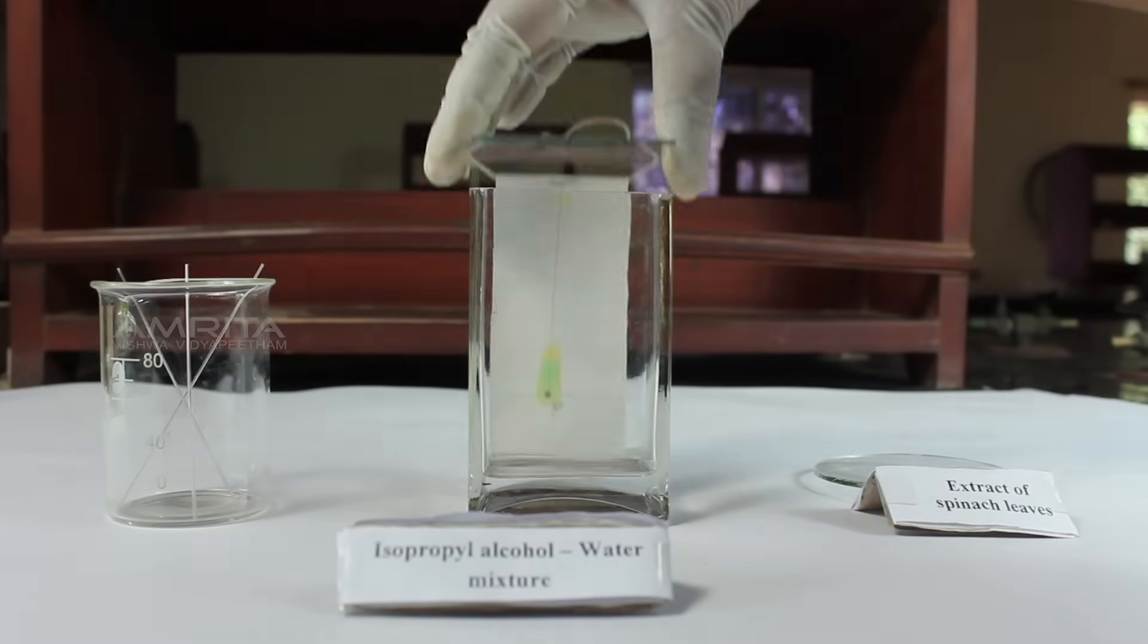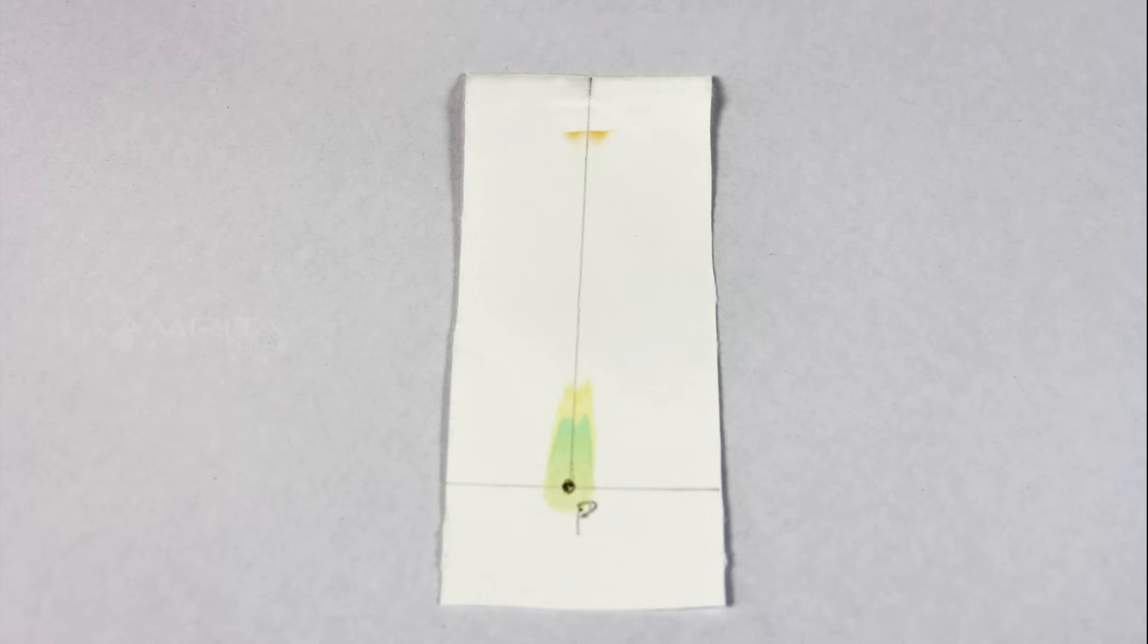Take the filter paper out of the chamber and mark the distance that the solvent has risen on the paper. This is called the solvent front. Dry the filter paper and measure the distance of the solvent front from the original line and the distance traveled by the solvent from the original line.